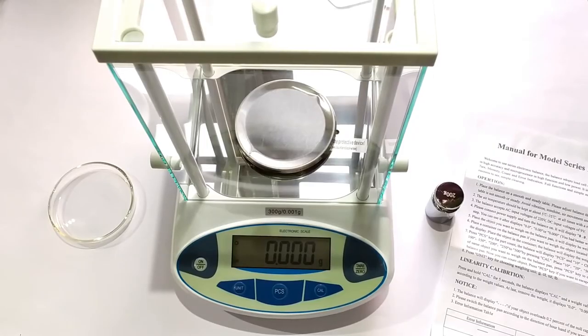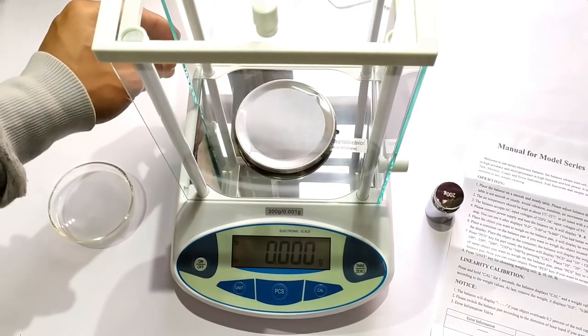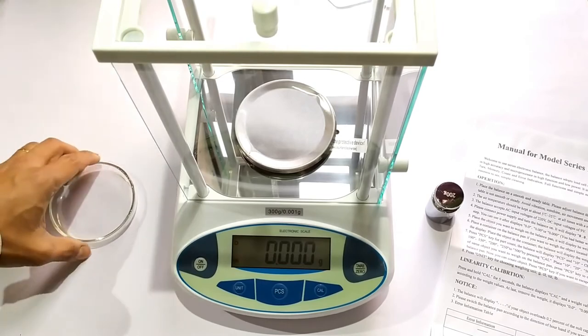Now that the device has been calibrated, let's see how it performs. We place a weighing container such as a petri dish onto the weighing pan.